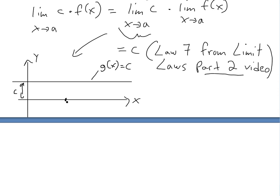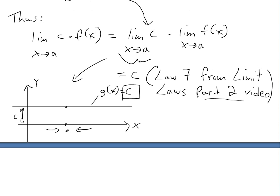So as you can see, this is a right here. So if we're approaching it from here or here, the value is always going to be c. So it's always going to be here. It doesn't matter where a is, it's always going to be this constant right here. So this one is pretty straightforward proof.